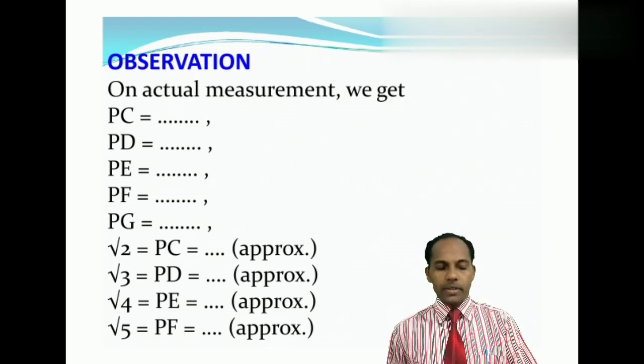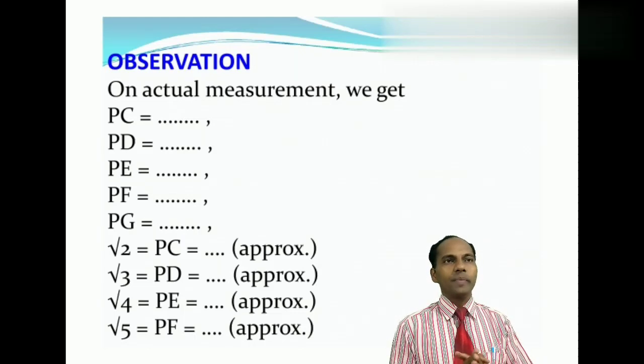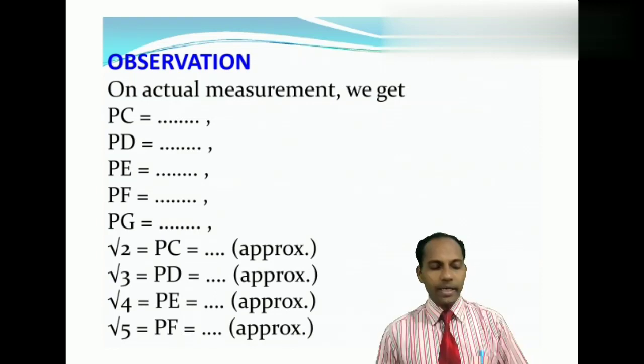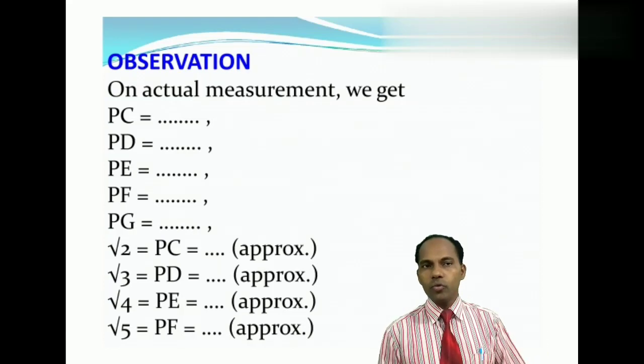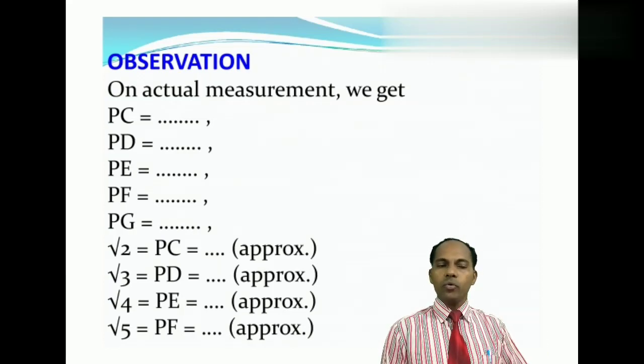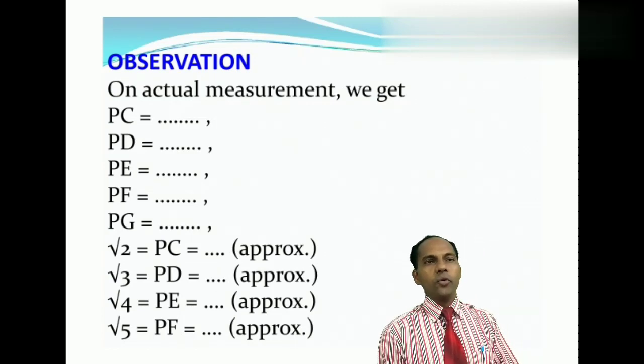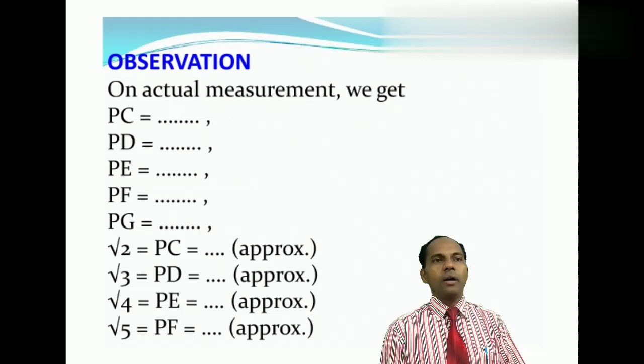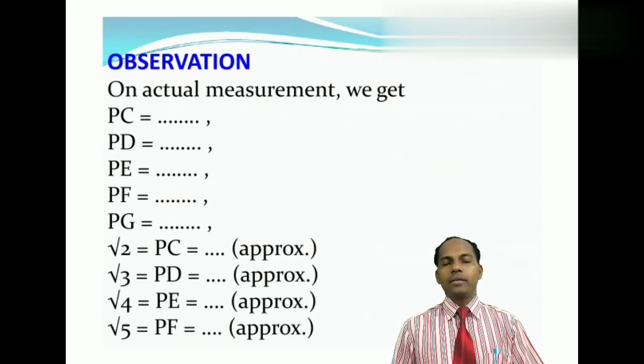Now let's go to the observation. So from the diagram we have drawn already, the square root spiral, and from the diagram, on actual measurement, we can get PC, PD, PE, PF, PG. You know this, which one, PC, where PC is equal to root 2, and we can get the approximate value of root 2 by, from the scale. And root 3, which is equal to PD. And root 4, which is equal to PE. We got that its approximate value is equal to 2. And root 5, which is equal to PF, and we will get the approximate value from the scale.